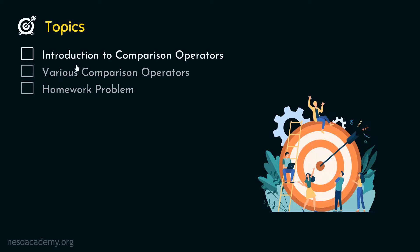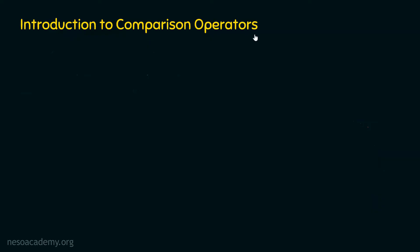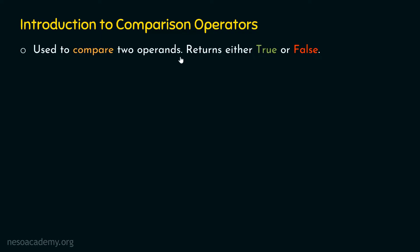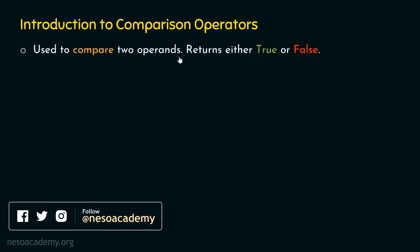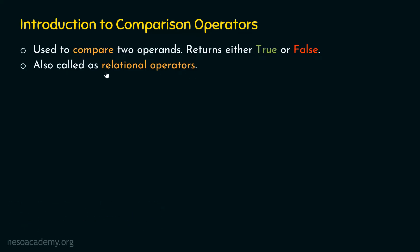Let's start with introduction to comparison operators. What are comparison operators? Comparison operators are used to compare two operands at a time, which means that comparison operators are binary operators — they are operated on two operands. In response, they always return either true or false. They are also called relational operators; sometimes you will see relational operators in place of comparison operators — they both mean the same.